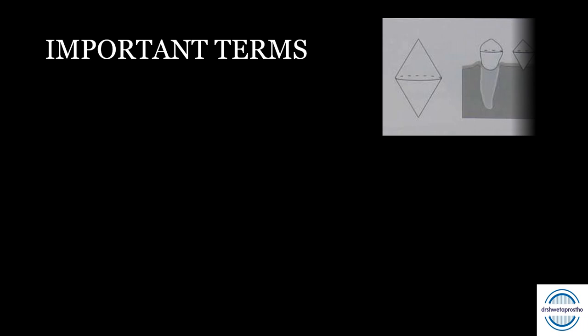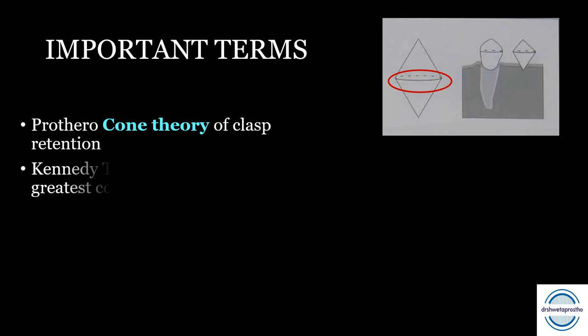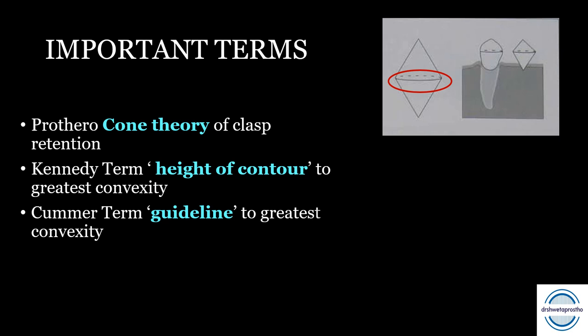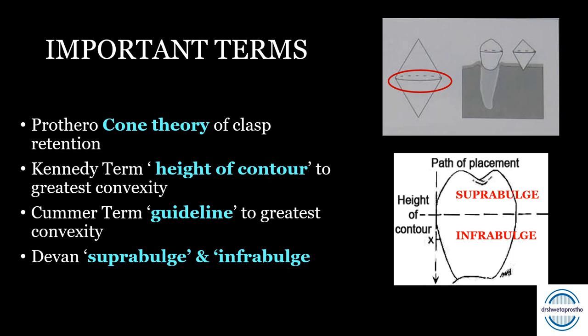Some important terms that come as MCQ questions: the contours of the clinical crown resemble two cones sharing a common base — this is called the cone theory, proposed by Prothero in 1960. The line formed at the junction of this base represents the greatest diameter of the tooth, called the height of contour, proposed by Kennedy. Cummer used the term guideline for this greatest convexity. The area occlusal to the height of contour is called supra-bulge and the area cervical to it is called infra-bulge — these terms were proposed by DVAN.